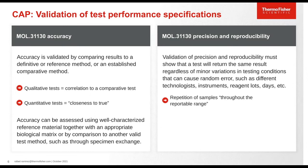Accuracy is validated by comparing results to a definitive or reference method or an established comparative method. For qualitative tests we look at correlation to a comparative test, whereas for quantitative tests we're looking for closeness to the true results. Accuracy can be assessed by using well-characterized samples in an appropriate biological matrix or by comparison to another valid test method such as a specimen exchange.